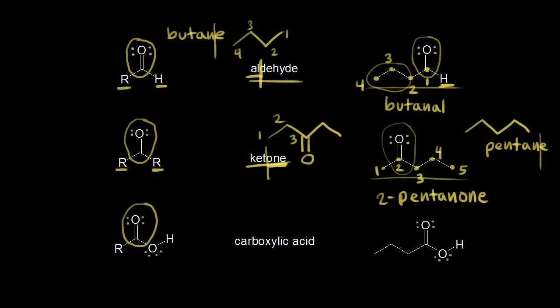For the aldehyde, we didn't need to indicate that it's at carbon one — that's the only place it could possibly be. Notice that an aldehyde has a hydrogen directly bonded to the carbonyl carbon, whereas a ketone has a carbon on each side directly bonded to that carbonyl carbon. That's the difference between an aldehyde and a ketone. A lot of students have a hard time telling the difference, so look for this hydrogen directly bonded to the carbonyl carbon — that's an aldehyde.